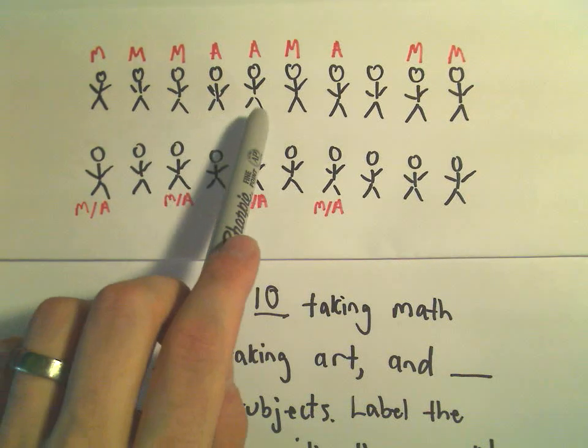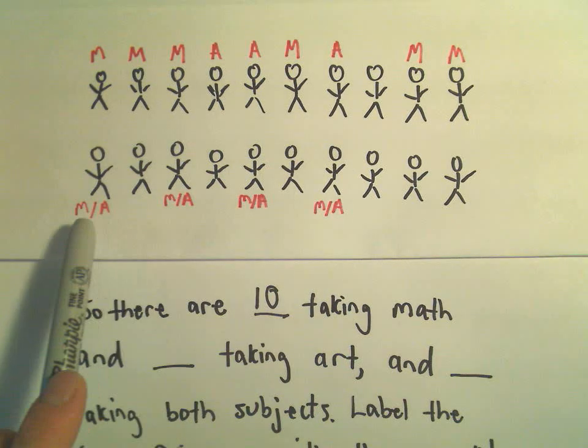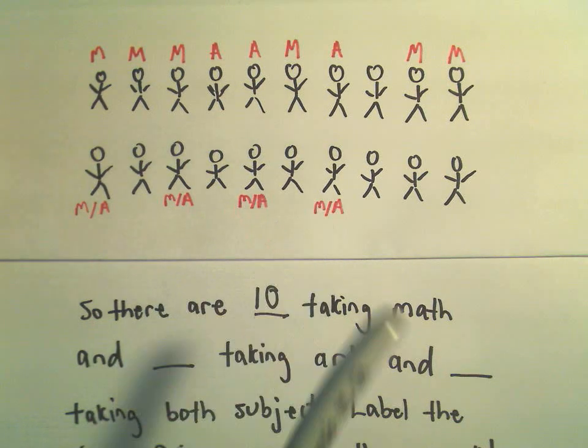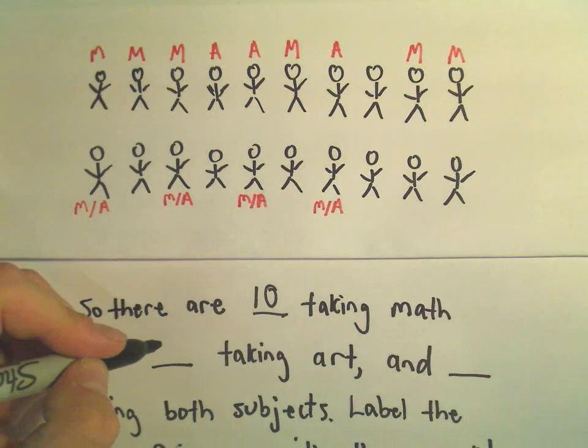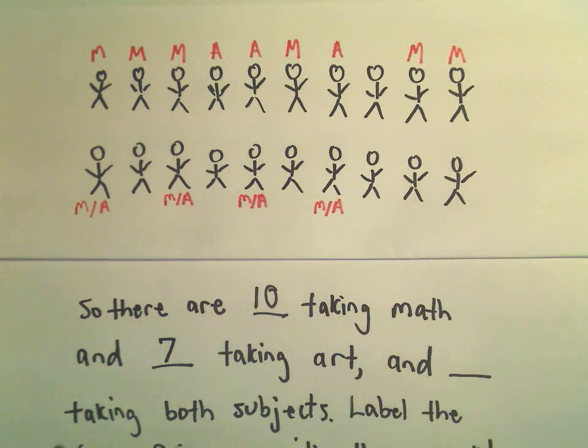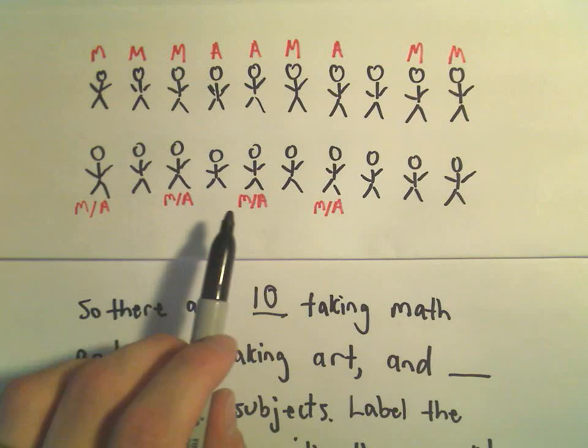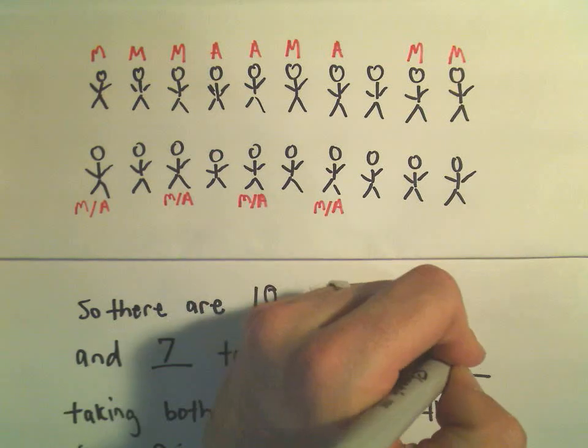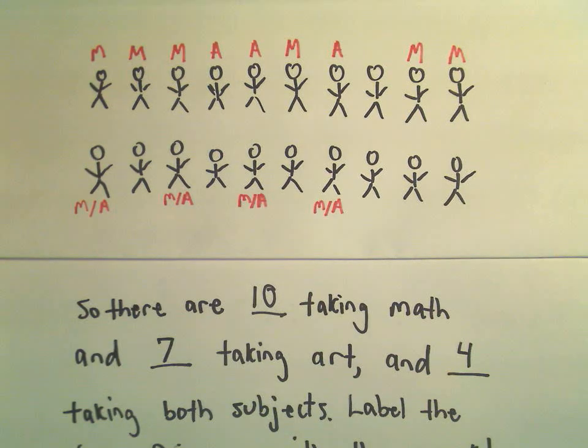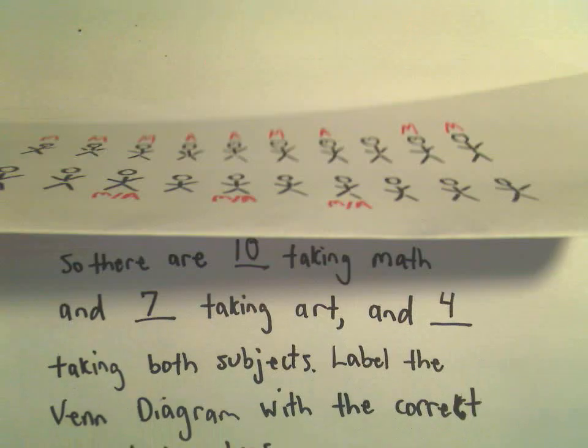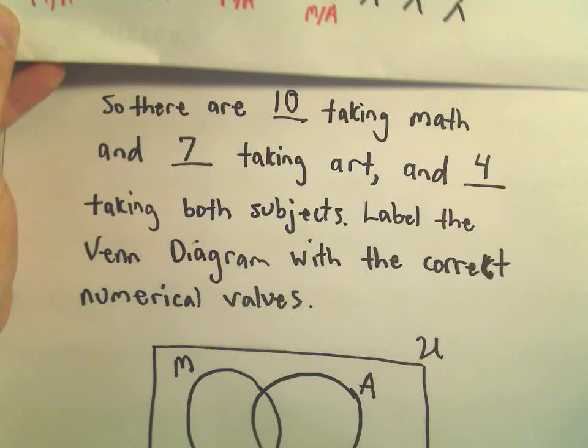Taking art, there's one, two, three, four, five, six, seven people taking art. And it looks like there's how many people taking both subjects. It looks like there's one, two, three, there's four people taking both subjects. We want to use this information to fill in our Venn diagram. I've got a little Venn diagram down here at the bottom.